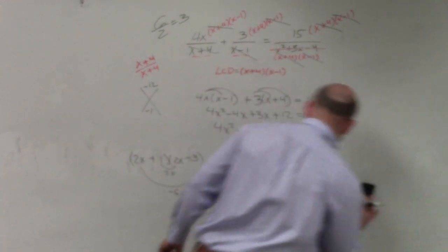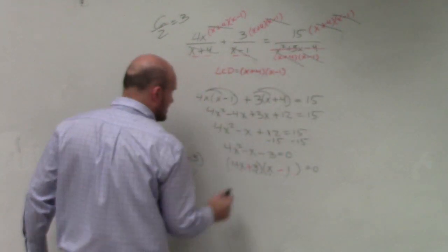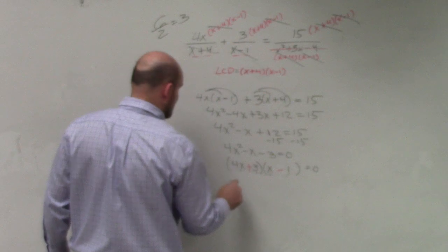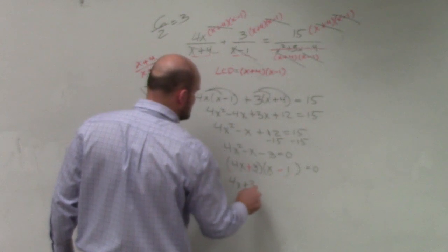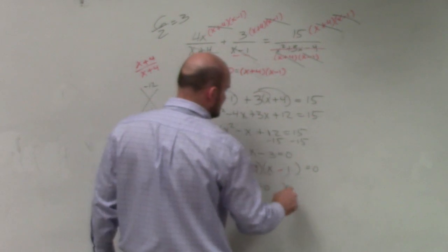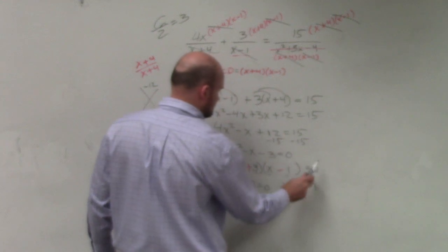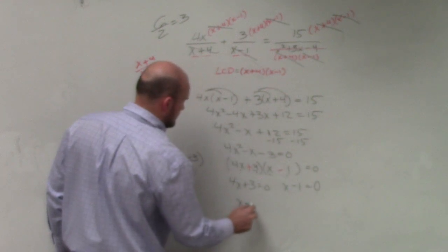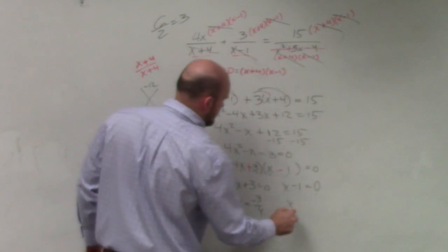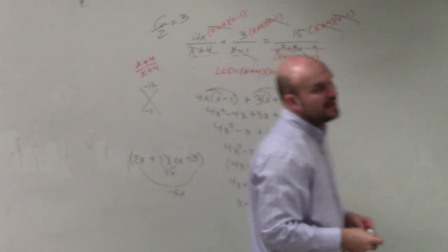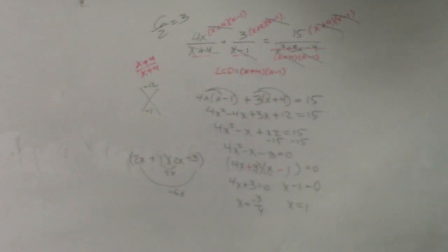Now, I use my zero product property and I set them both equal to 0. Actually, we're not going to have time for you guys to do it, but that's OK, because this problem gives me exactly what I want. So now, x equals 1 and x equals negative 3 fourths.